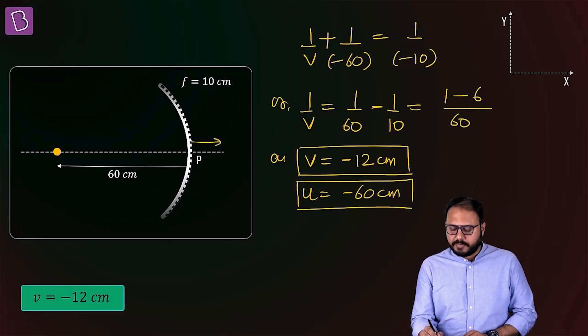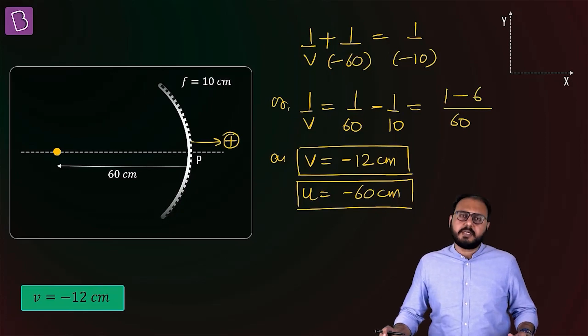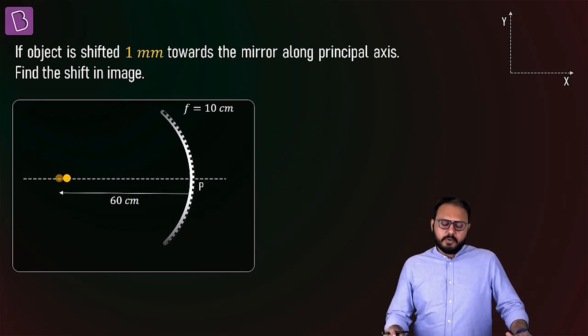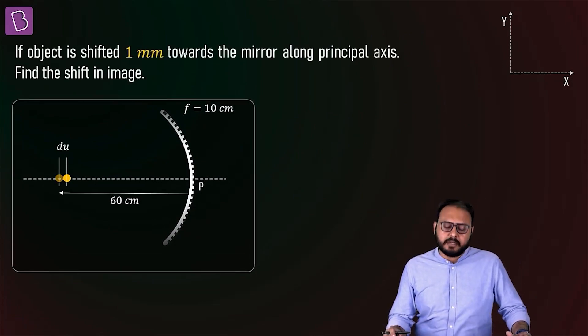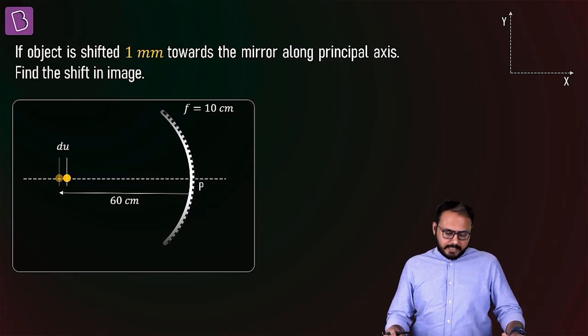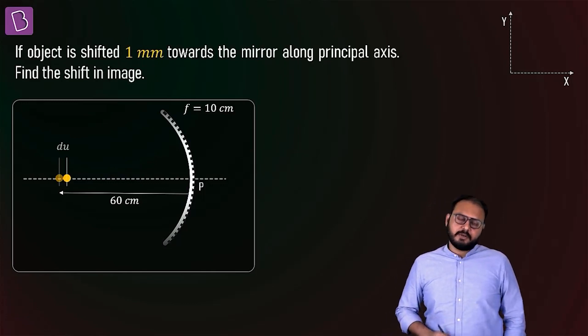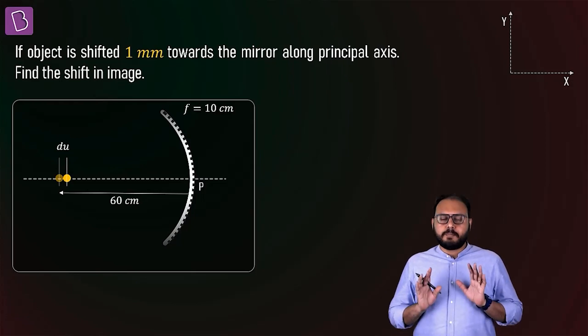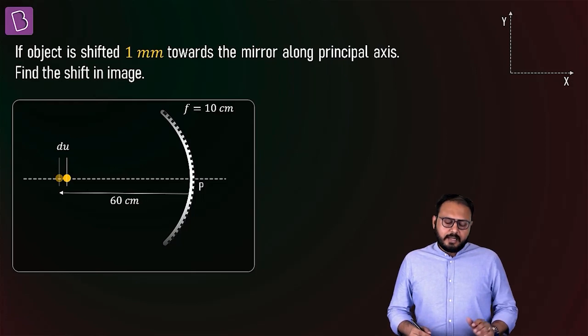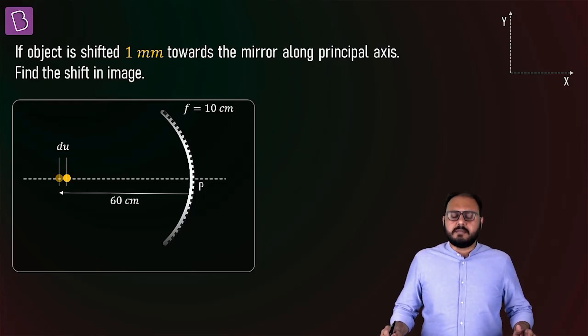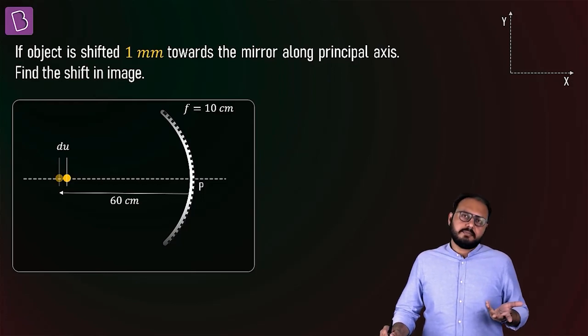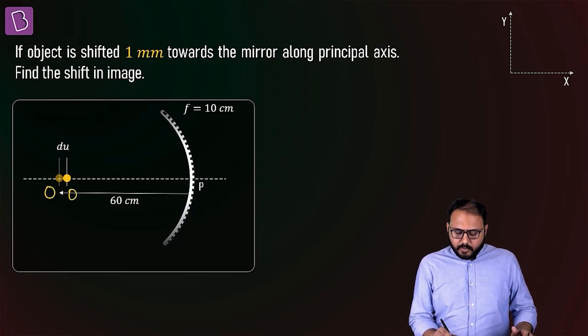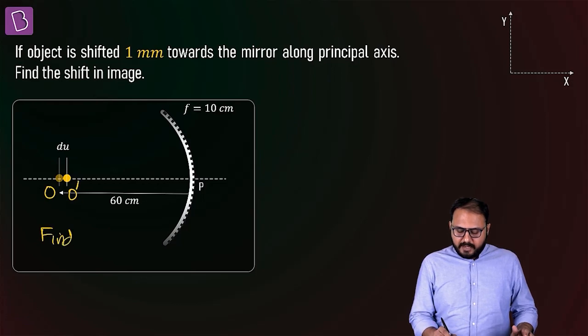Now it's a point object. Question is, what if somebody moves this object one millimeter towards the mirror? Oh that's not fair. The question is: find two images O and O', and then find the corresponding images I and I'.